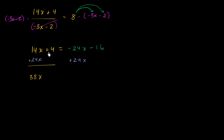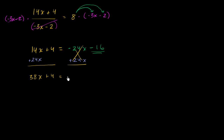So we have 38x plus 4 is equal to — negative 24x plus 24x, those cancel each other out — and we are left with just negative 16.